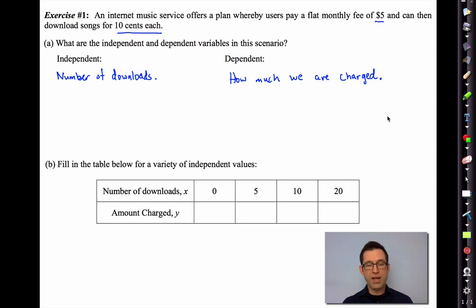All right, let's go through it. Well, there's not much we have to do for zero downloads, but it is important to note that we are charged something. In other words, we're charged that flat monthly fee, $5. So if we have a bad month, we don't get on to the music service, we don't order anything, we're still being charged $5. On the other hand, if we do five downloads, at 10 cents a piece, that's going to be 50 cents we're going to have to pay. But then we're going to have to take that 50 cents and add it to the $5, and we're going to get $5.50.